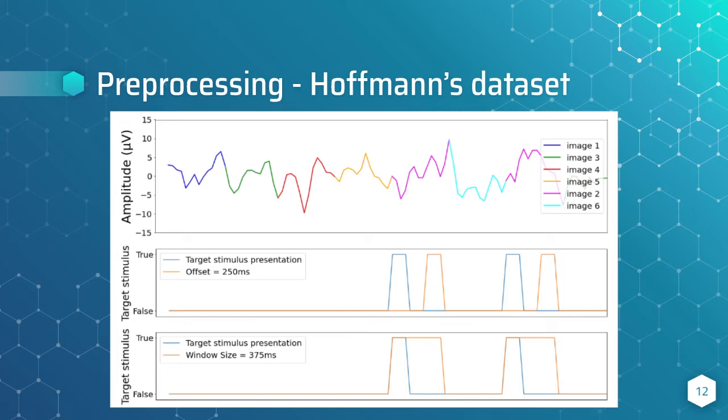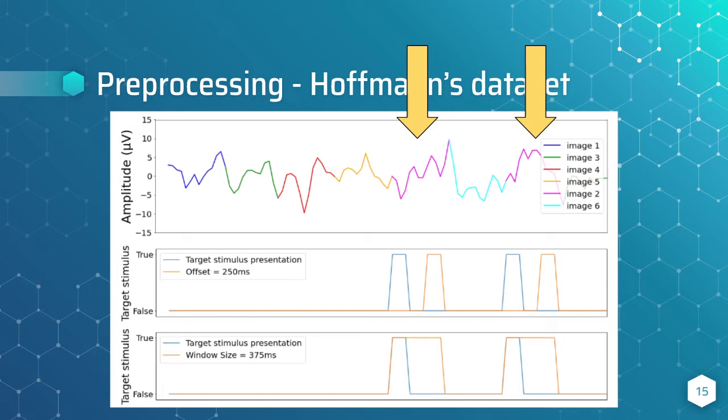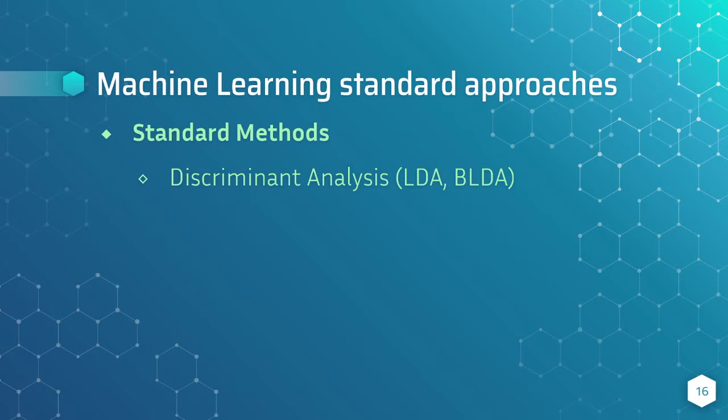Now look at the following plot. Here you have an example of adding some offset, where the orange plot is shifted to the right, and the bottom plot is an example where we change the window size, making it bigger. In this figure, we can also observe that the target stimulus is the image. Every time the pink plot appears in the input, the output target is true. So the output just depends on the offset and the window size.